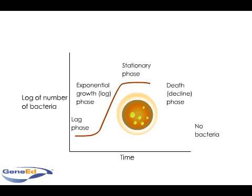This is thus termed the stationary phase. Because antibiotics usually act during latter stages in the cell cycle — during replication of DNA, synthesis of cellular components, or mitosis — bacteria in the stationary phase are less susceptible to antibiotics than bacteria in the lag phase.